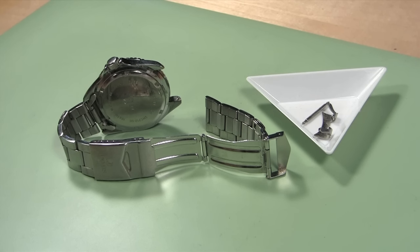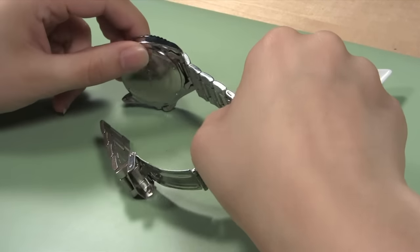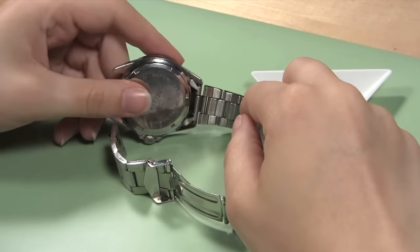The first end of the watch band hangs loose from the watch case. Turn the watch case so that the half of the watch band that is still attached to the watch case is accessible to your tools.